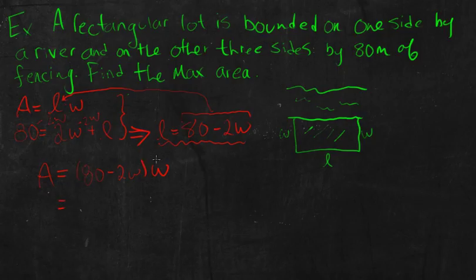So now I had to distribute here. So multiply both of these guys by W. So subtract 2W times W is negative 2W squared, and that's plus 80 times W, so that's 80W. And there I have it.